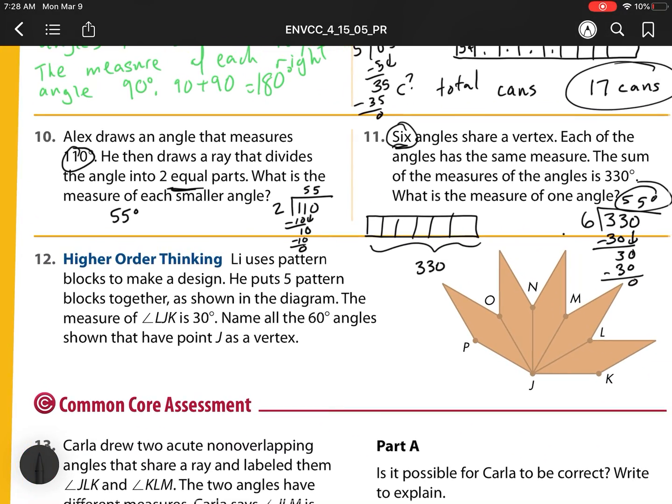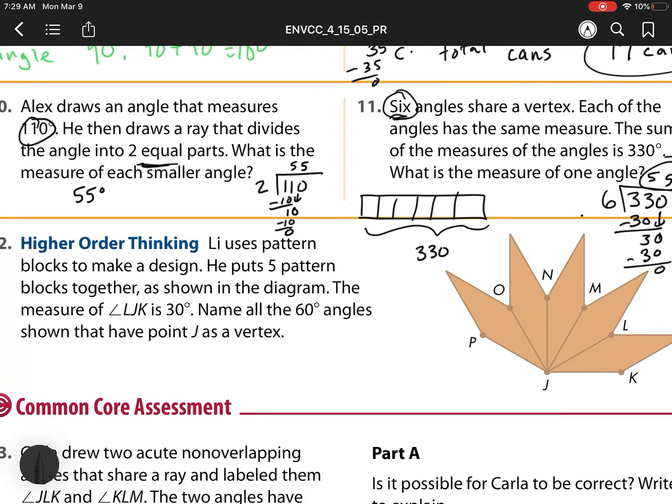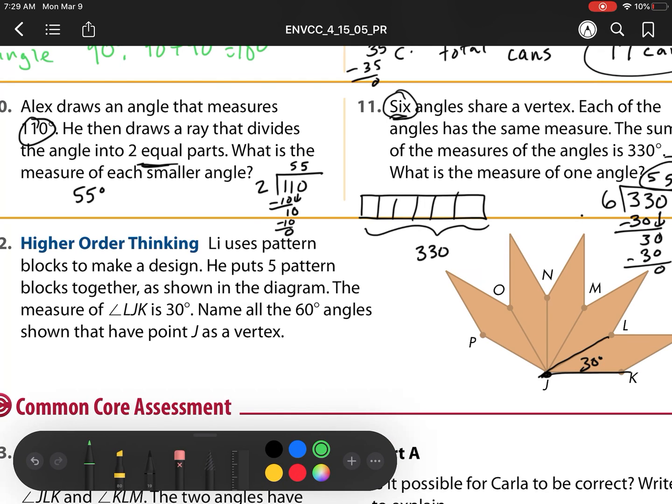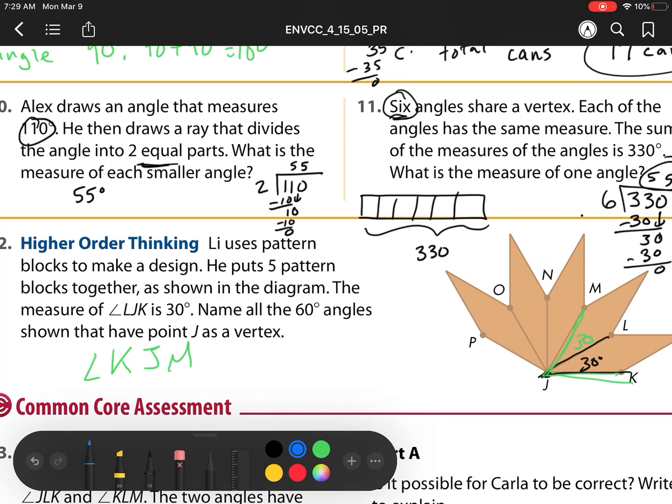Number 12. Lee uses pattern blocks to make a design. He puts five pattern blocks together, as shown as a figure. The measure of angle LJK is 30 degrees, which makes sense when we used pattern blocks earlier. Name all the 60-degree angles shown that have a point J as a vertex. So I'm looking for all my angles that have a point J as a vertex. So that means it needs to be two pattern blocks. So here is one, because that's 30 plus 30. So what is that? That's angle KJM.